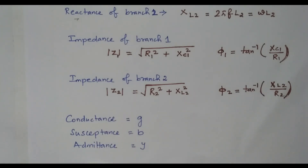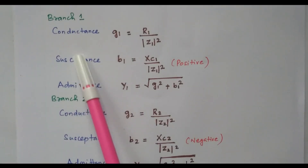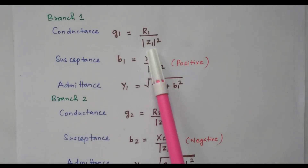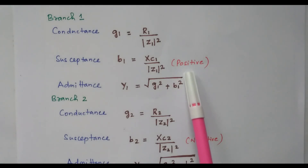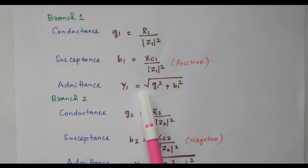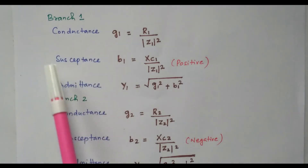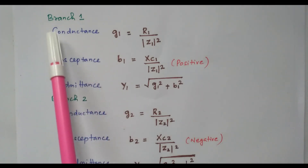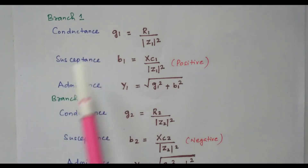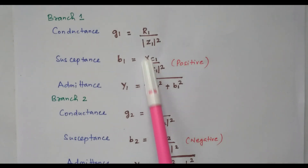We will see these three terms for branch 1 as well as branch 2. For branch 1, conductance G1 is written as R1 divided by Z1 squared. Susceptance B1 is written as Xc1 divided by Z1 squared, and it is positive because in the capacitive circuit it is positive. Admittance Y1 equals the square root of G1 squared plus B1 squared. These are the reciprocals of resistance, reactance, and impedance respectively.